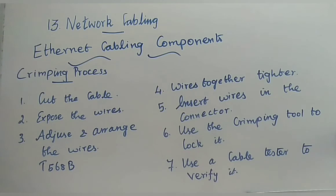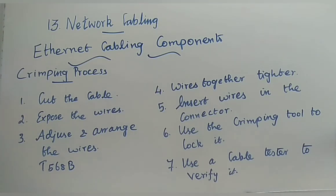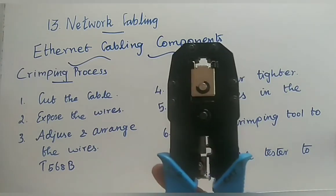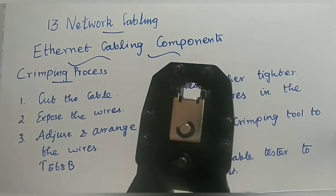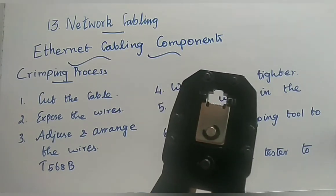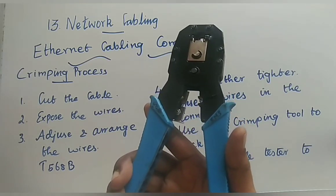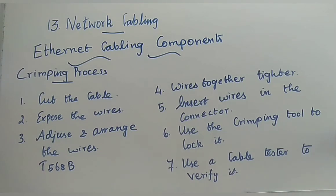Today we discussed all the topics under ethernet cabling components: first, the patch wire (twisted pair cable); second, the RJ45 connector with wiring schemes for both the connector and the ethernet port; third, the ethernet port and ethernet card (also called Network Interface Card); and finally, the crimping tool and the crimping process with its seven steps.